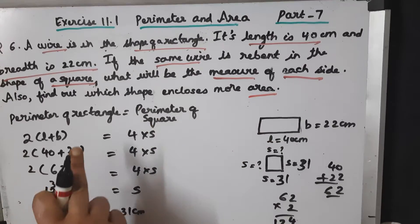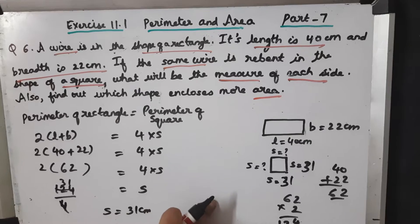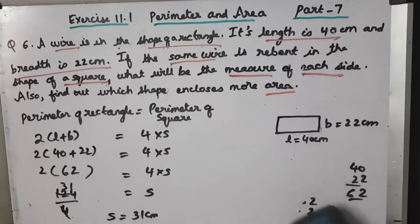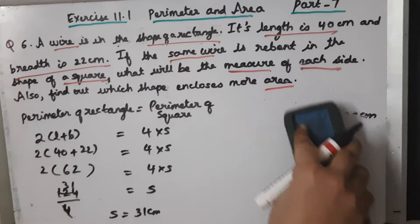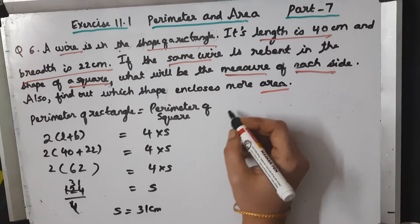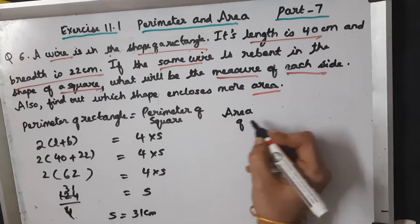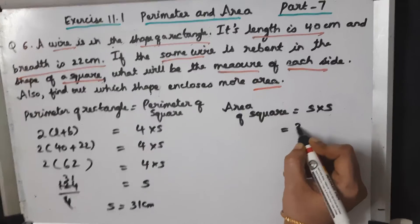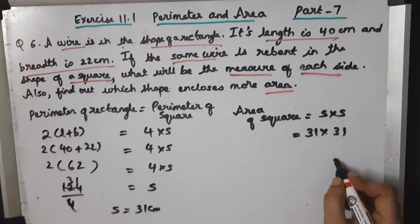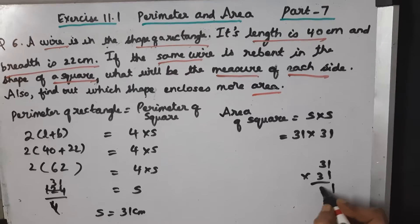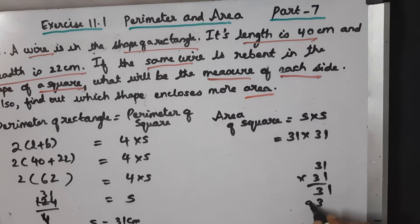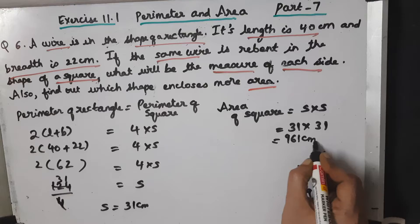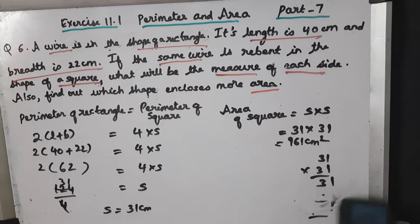We have all the information. We found the unknown ones also. Area of square is S into S, 31 into 31. Let's calculate: 1 times 1 is 1, 1 times 3 is 3, 3 times 1 is 3, 3 times 3 is 9, which gives 961. So it is 961 centimeter square. Area is always measured in square units.